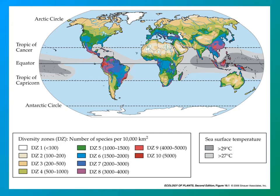Diversity varies around the planet, and you can see here in this figure the more colorful areas toward the equator have a much greater number of species per hectare.